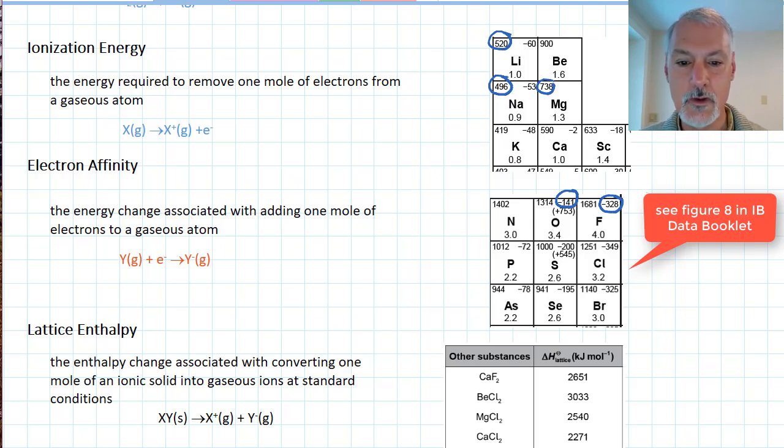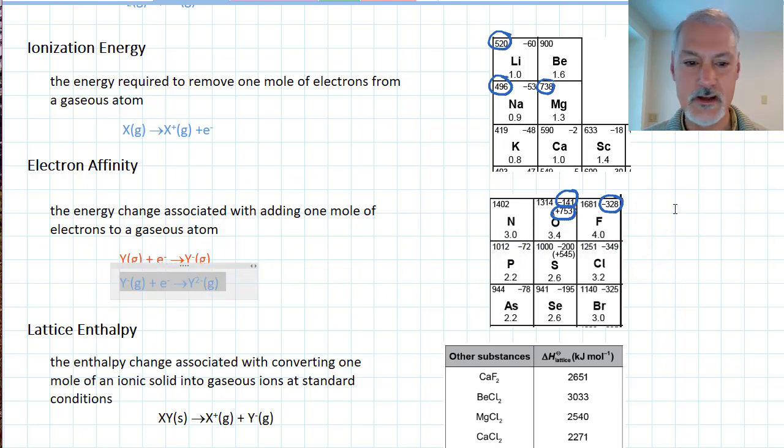However, if you need to add more than one electron, that value is also given here, we can see that the addition of a second electron can often lead to an endothermic process. So depending on how many electrons one needs to add, you may need to add together these values. So usually the first one is negative, and the second value tends to be positive.